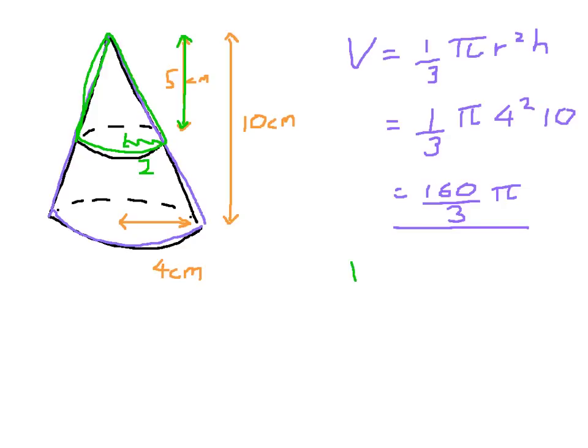And so, using the formula again, we're going to have one third pi, and this time r squared, that's going to be two squared, and the height is just five. So this time that equals twenty over three, and that's because two squared is four times five is twenty, twenty over three pi. So that's the volume of the small cone.